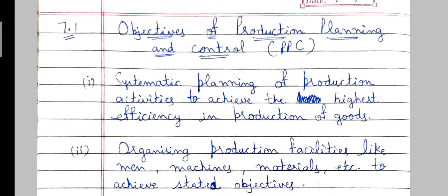The second objective is organizing production facilities like men, machines, materials, etc., to achieve stated objectives. Everything required for production or manufacturing — labor, machines, equipment, and materials — we have to organize in a systematic way. Organizing these activities will help us in achieving the industry's objectives.